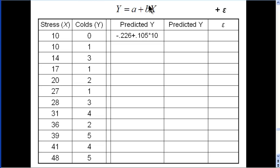Plus the slope, which is 0.105, and then we multiply that by X. And in this person's case, X is equal to 10.